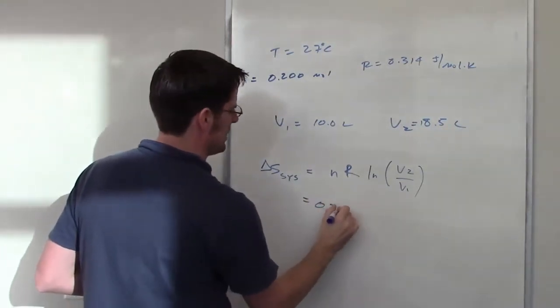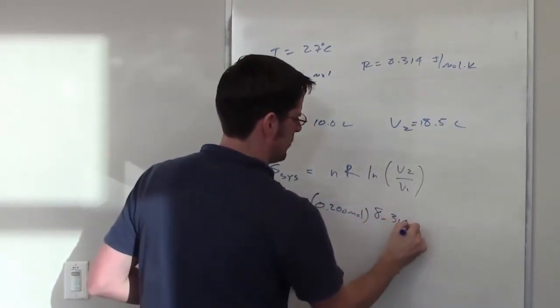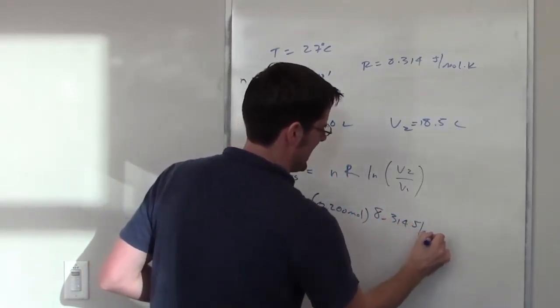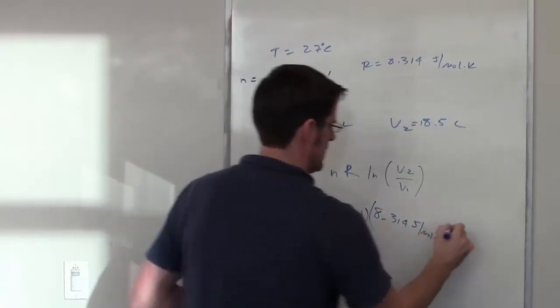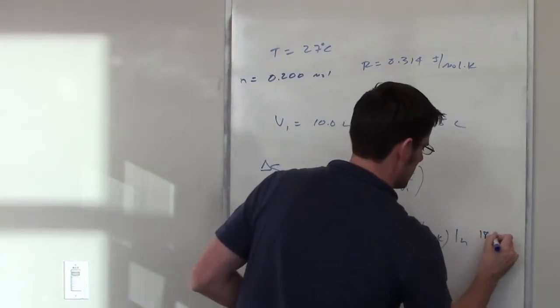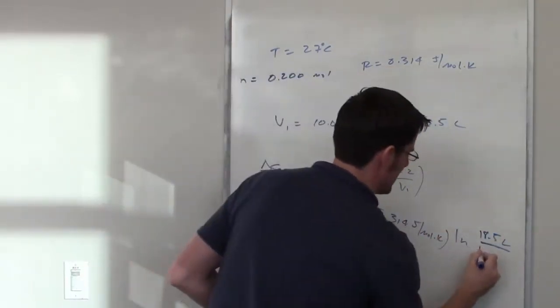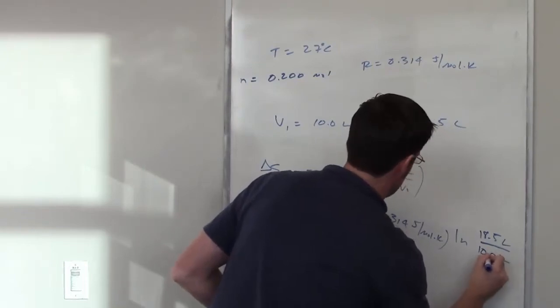I've got 0.200 moles. I've got R as being 8.314 joules per mole Kelvin. And then I've got the natural log of V2 which is 18.5 divided by V1, and it's liters, sorry, divided by V1 which is 10 liters in the denominator.